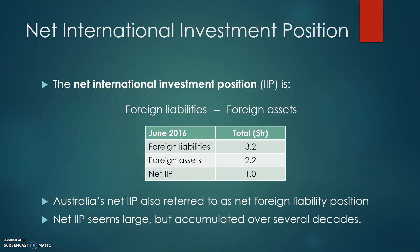Using figures for June 2016, we can see that foreign liabilities accumulated to $3.2 trillion in total while foreign assets were $2.2 trillion in total. Using the IIP equation, if we take away $2.2 trillion from $3.2 trillion, we are left with $1 trillion, which is Australia's net international investment position as of June 2016.